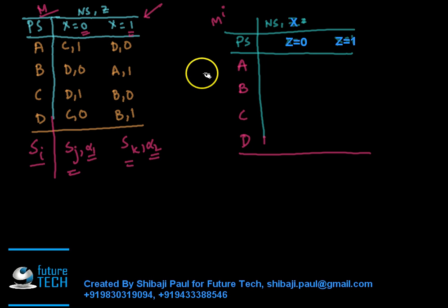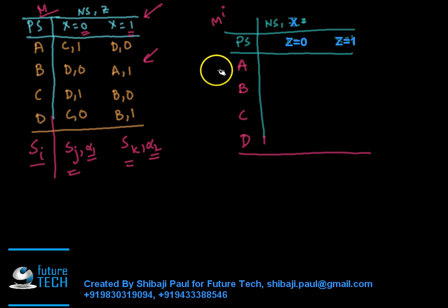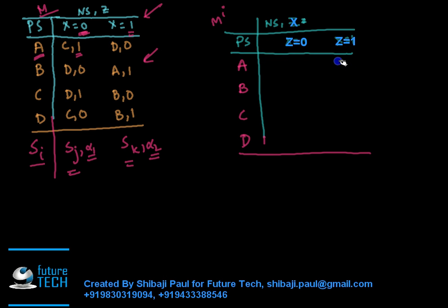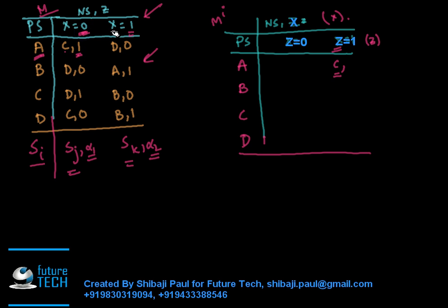In order to find the inverse machine, we just reverse the thing. In the inverse machine, the input of machine m becomes the output of machine mi, and the output becomes the input. So for input x=0 at state a, it goes to state c producing output 1. Now this 1 becomes the input for the inverse machine. So in the inverse machine, a goes to c for input 1, producing output 0.